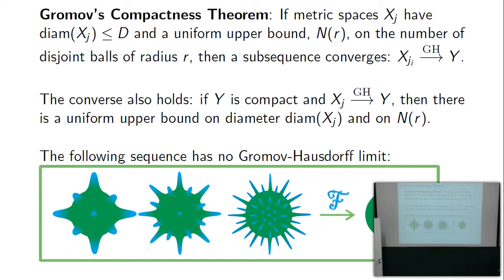Here is a sequence that has no Gromov-Hausdorff limit. These are spheres — in three dimensions you can make them with non-negative scalar curvature — with wells all over them. This fails to have a uniform bound on the number of balls: if you center balls at the tips with radius half the length of the spines, they won't overlap, giving an increasing number of disjoint balls with no uniform bound. So no Gromov-Hausdorff limit can exist.